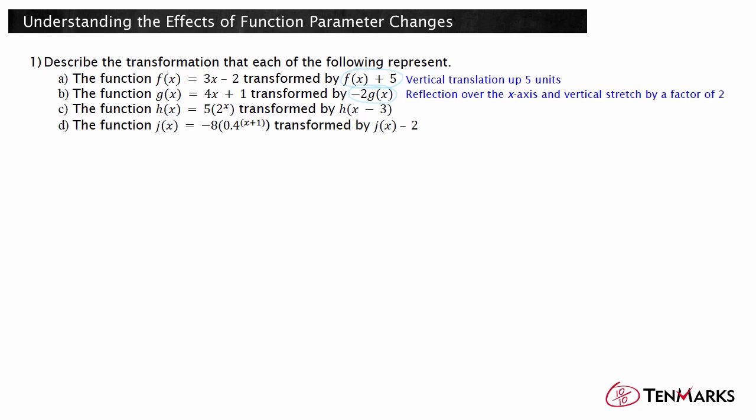The function h of x equals 5 times 2 to the x power, transformed by h of the quantity x minus 3. The 3 is subtracted from the x in the parentheses, so this represents a horizontal shift. Since k is negative, this shift is 3 units to the right.